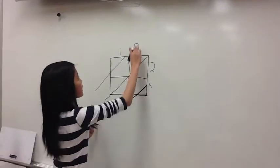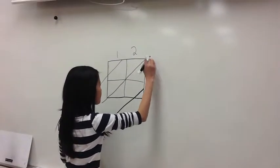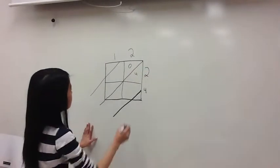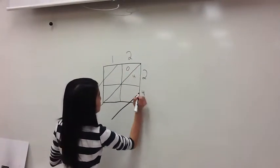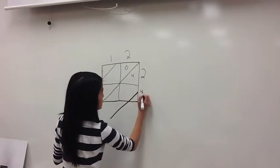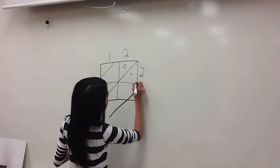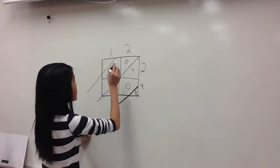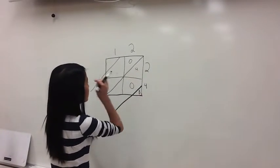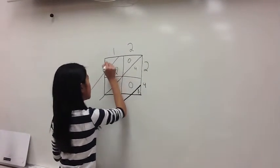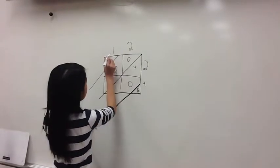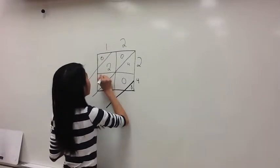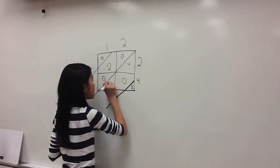So then you're going to do 2 times 2, and that's 4, so you put a zero here and a 4 here. Then you do 2 times 4, which is 8. So I put the 8 right here, and the zero right here. So then I do 1 times 2, which is 2, and you put the zero here. Then you put 1 times 4, which is 4, and we put it right there.